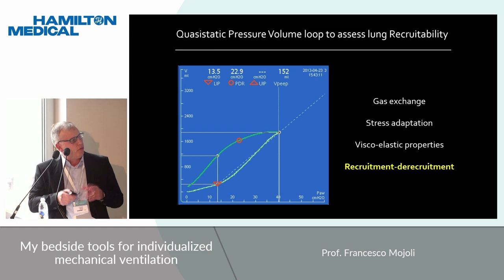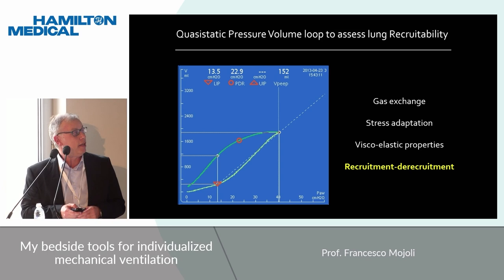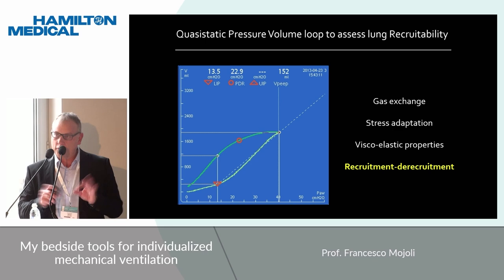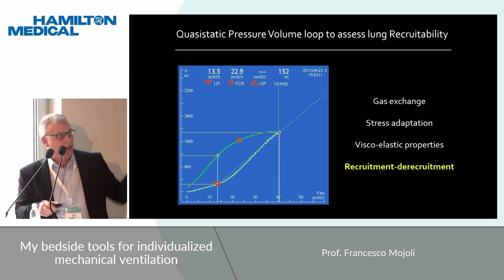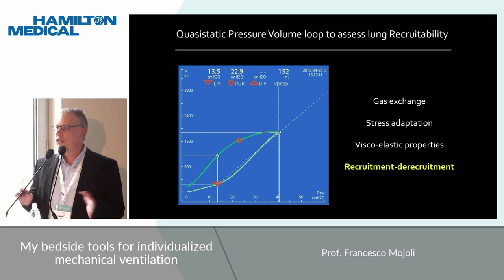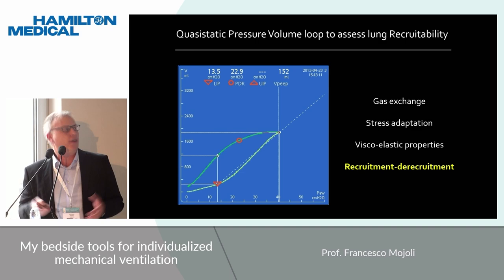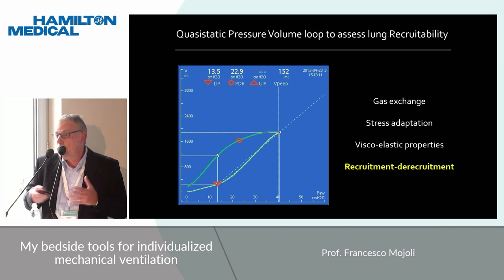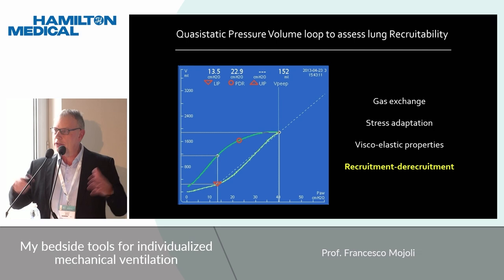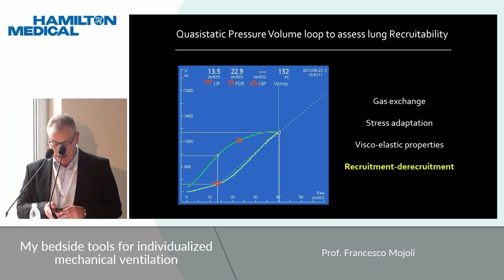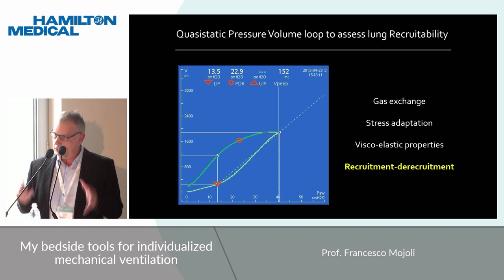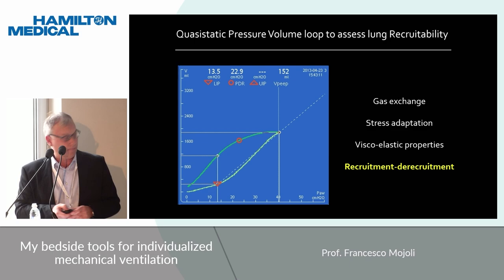This is something that you get by performing a low flow inflation and deflation maneuver in your patient. The inspiratory and expiratory limbs are not superimposed, meaning there is some hysteresis, so the area enclosed in the loop is not zero. This is physiology. But if you see a large increase of this hysteresis, we are moving to pathology, probably because this is due to recruitment and de-recruitment occurring during your maneuver.